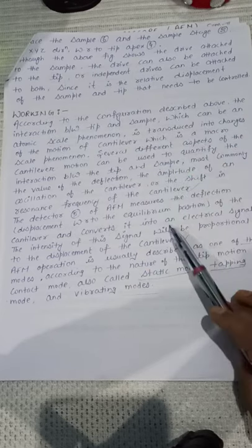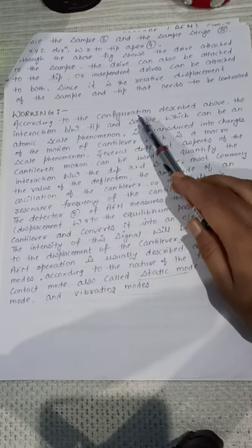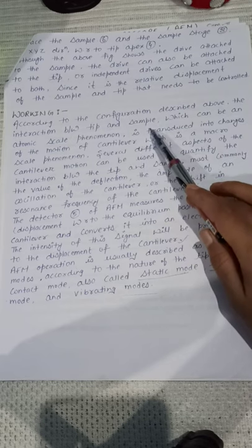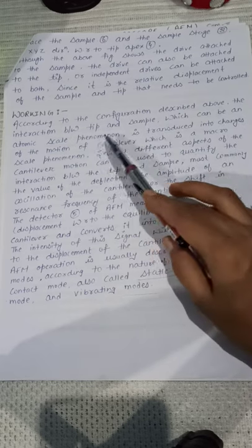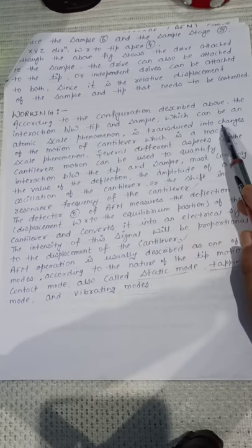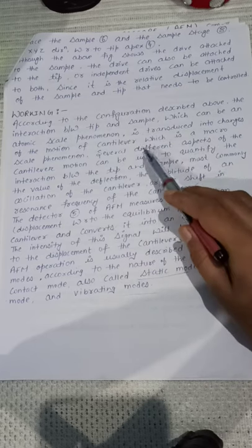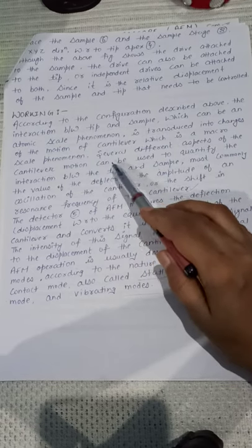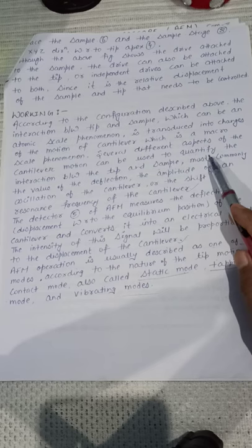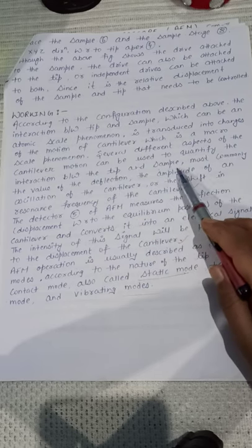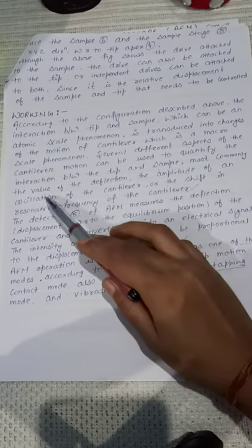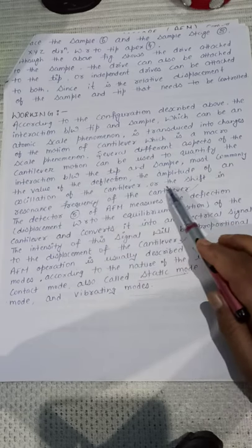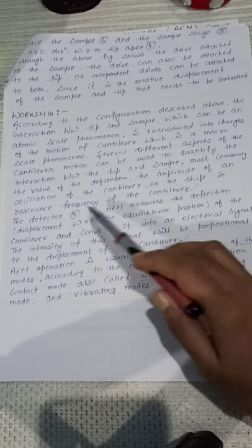Now come to the working. According to the configuration described above, the interaction between tip and sample, which can be an atomic scale phenomenon, is transduced into changes of motion of the cantilever, which is a macroscale phenomenon. Several different aspects of the cantilever motion can be used to quantify the interaction between the tip and sample. Most commonly the value of the deflection, the amplitude of oscillation of the cantilever, or the shift in the resonant frequency of the cantilever.